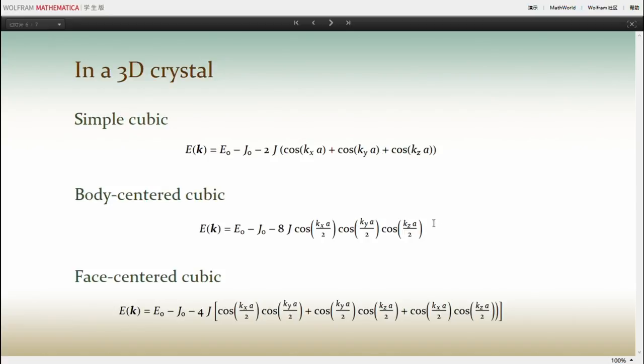While for a body-centered cubic, there are eight nearest neighbors, which leads to an expression like this. For a face-centered cubic, there are twelve nearest neighbors, and we get a dispersion relation like this.